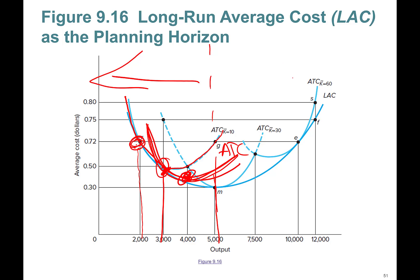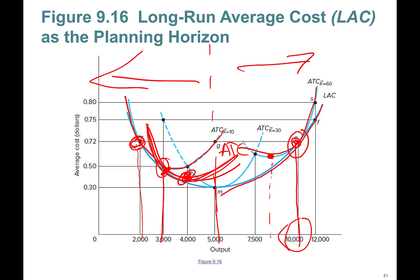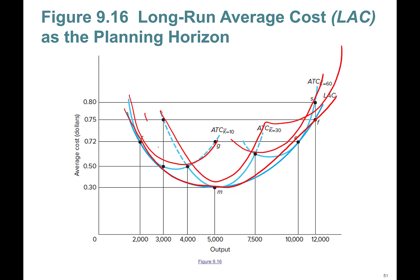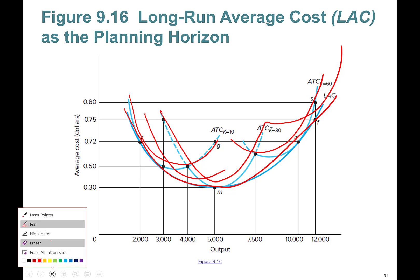In the economies of scale region of the long-run average cost curve, a short-run average total cost curve is tangent at a greater level of output than its own minimum if it is tangent to the right of the long-run average cost curve's minimum point. Visually, the long-run average cost curve comes from an infinite number of short-run average total cost curves — it is the locus of their lowest tangency points.